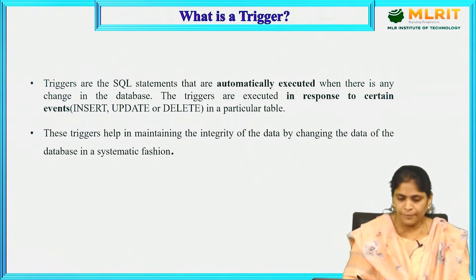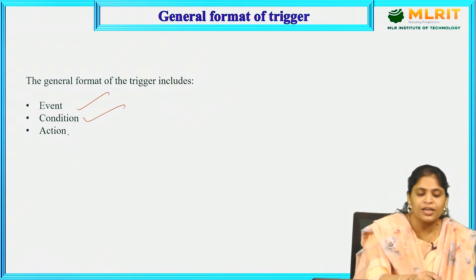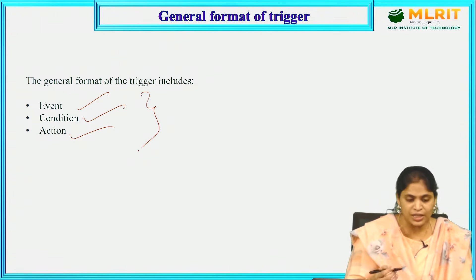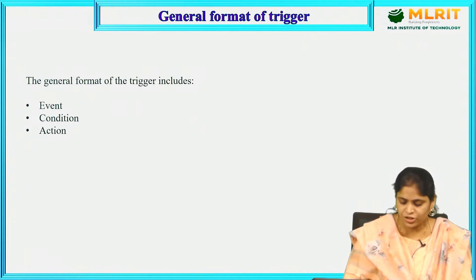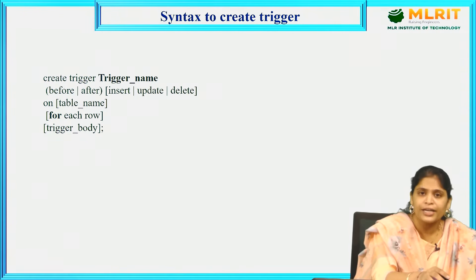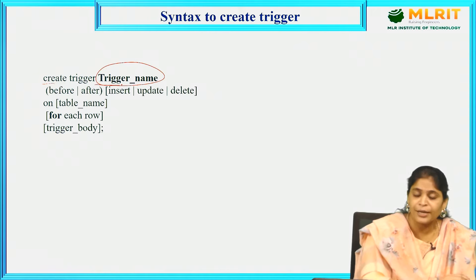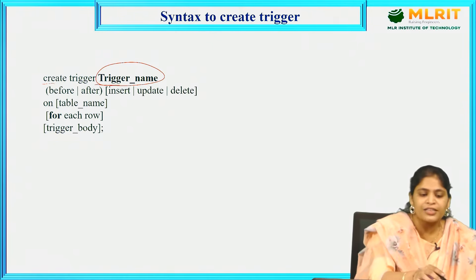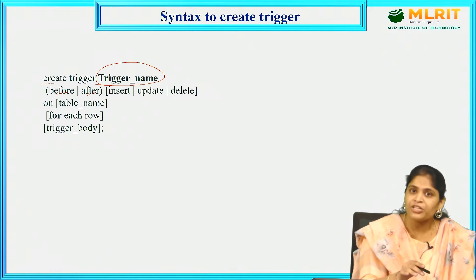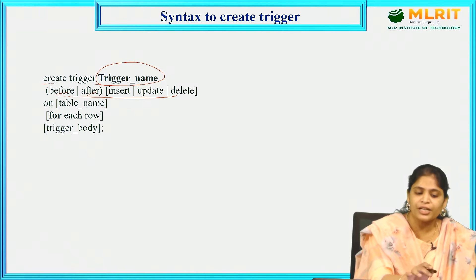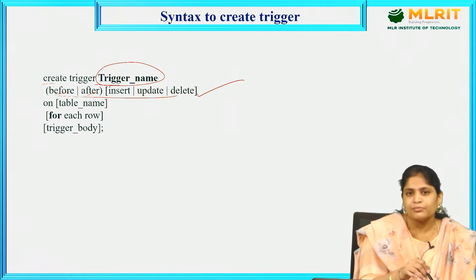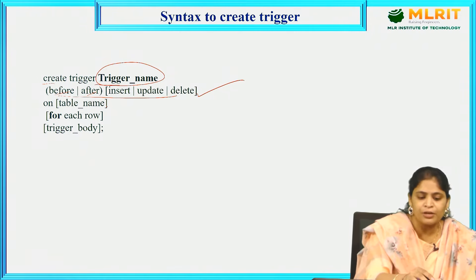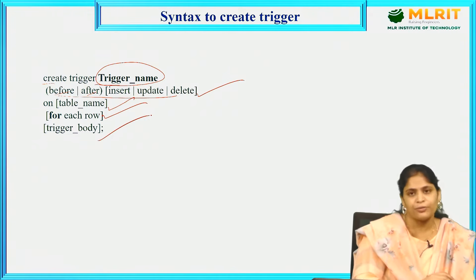The general format of a trigger includes event, condition, and action. The syntax uses CREATE TRIGGER followed by the trigger name. It specifies when the trigger will be executed — either before or after insertion, deletion, or updation. Then it specifies the table name, whether the trigger will be activated for each row (FOR EACH ROW), and finally the trigger body.